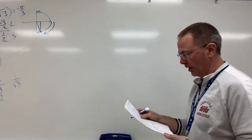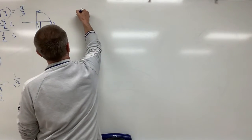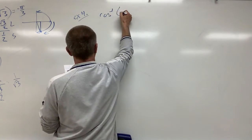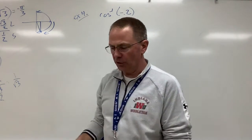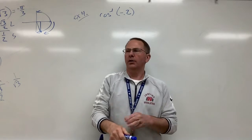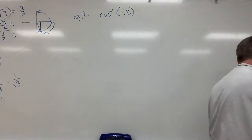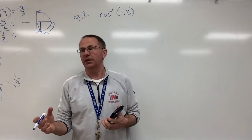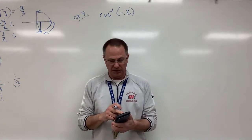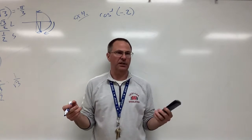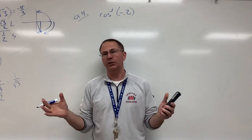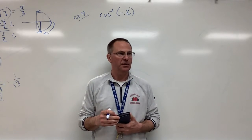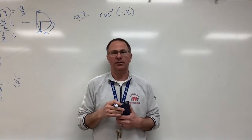Now we're going to grab our calculator — we get to do quite a few calculator problems. Example 4: the arc cosine of negative 0.2. You can memorize what to do or try to understand it. This says it wants the answer in radians, so make sure your calculator is in radian mode. It does matter whether you want the radian measurement or degrees. If you want degrees, you need your calculator in degree mode.